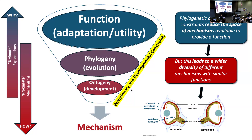You end up with a vertebrate that has a blind spot and a cephalopod that doesn't. It would be nice to have a cephalopod eye without that blind spot, but our brains make do. The cephalopod has a different developmental pathway that allows it to build its eye differently. We don't have different eyes because we're doing different things — we have different eyes because we have different development. And that's what is really cool.